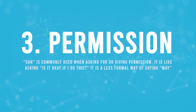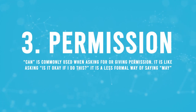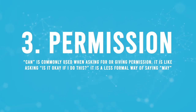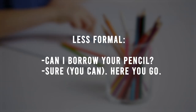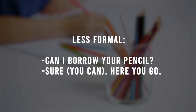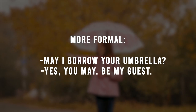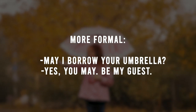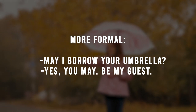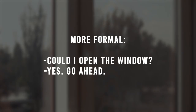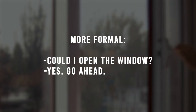Three: permission. Can is commonly used when asking for or giving permission. It is like asking, 'Is it okay if I do this?' It is a less formal way of saying may. Less formal: Can I borrow your pencil? Sure you can. Here you go. Can my kids sit here? Of course they can. More formal: May I borrow your umbrella? Yes you may. Be my guest. Could I open the window? Yes, go ahead. Could is a little more formal than can.